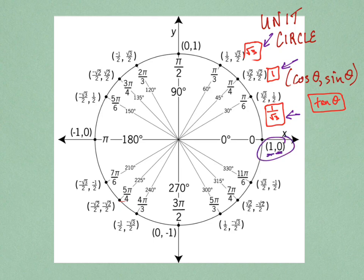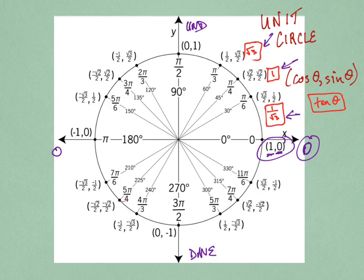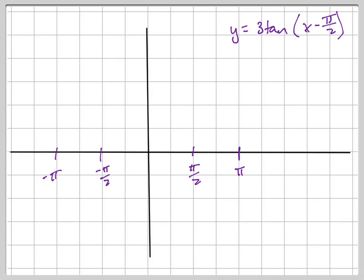Tangent is sine over cosine, so it's y over x. Your tangent at 0 is going to be 0, your tangent at pi over 2 is going to be undefined (does not exist), at pi it's 0, and at negative pi over 2 it's undefined. So for 0 and pi — every multiple of pi — the answer is 0, including at 0 itself.